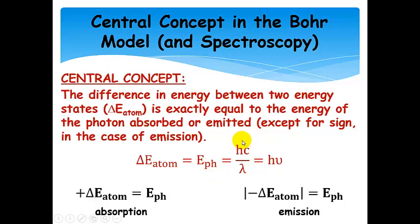And then just remember that we can calculate the energy of a photon if we have its wavelength or if we have its frequency. And so, the sign of the change in energy of that atom or ion is positive for absorption, and so then delta E atom is just equal to E photon.